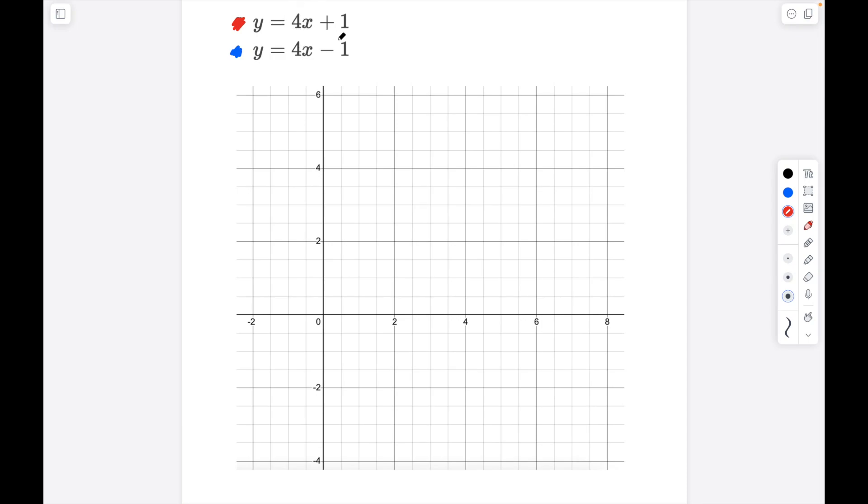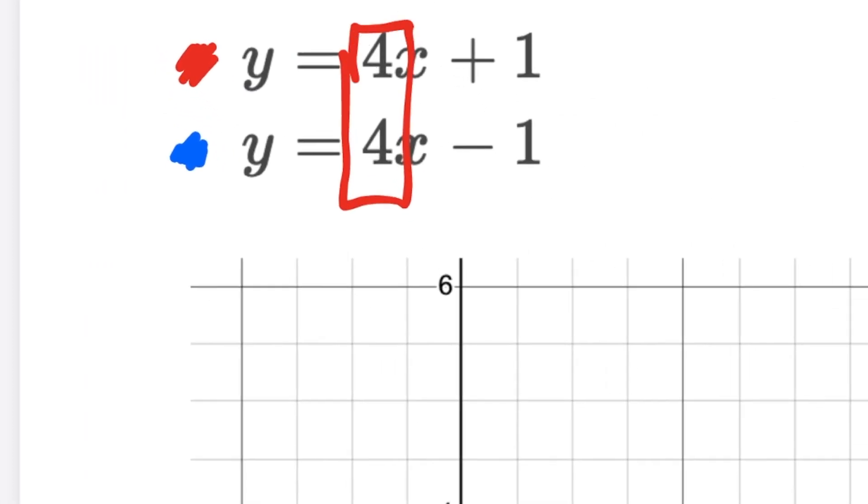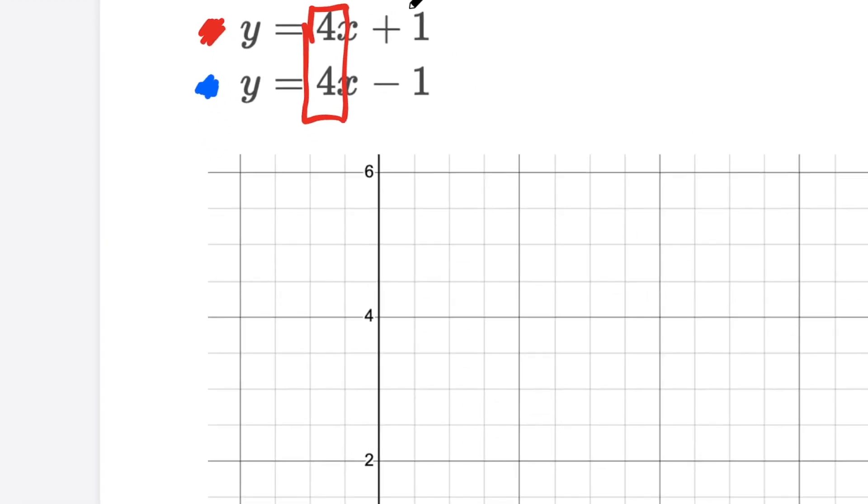Let's kick this off with a simple linear system and right away just looking at this linear system something jumps out at me and that is the fact that both of these lines have a slope of four. Now that is a clue that something really interesting is going to happen here.